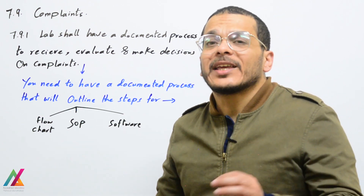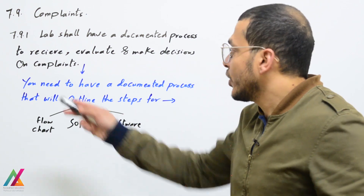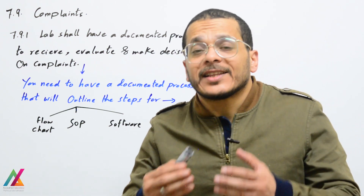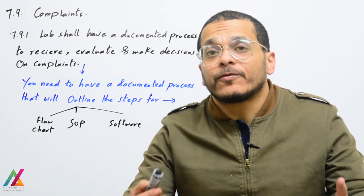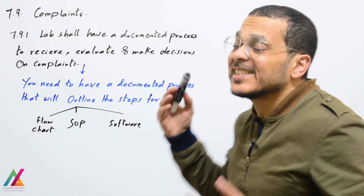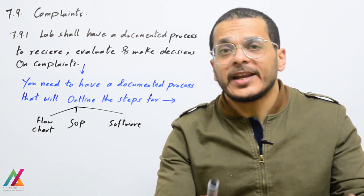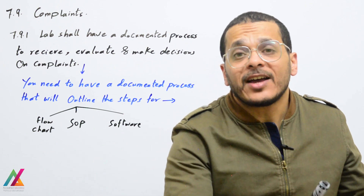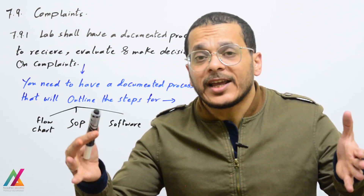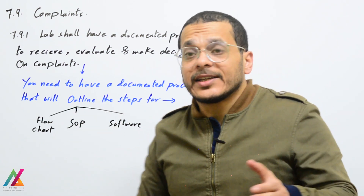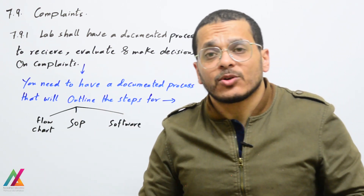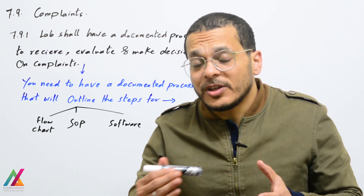First point: the lab shall have a documented process to receive, evaluate, and make decisions for complaints. You need a documented process that outlines the steps to follow inside the lab to solve any complaint for any customer — steps for receiving the complaint, evaluating it, and the action to be taken to solve the problem. All of these steps shall be outlined in a documented process; it can be a flowchart, SOP, or software.